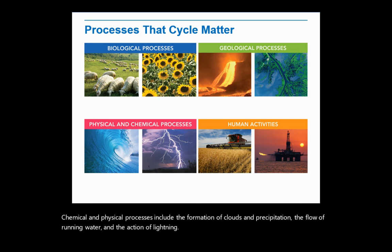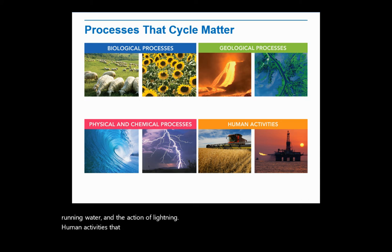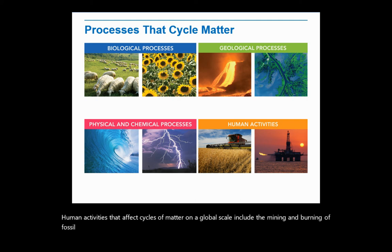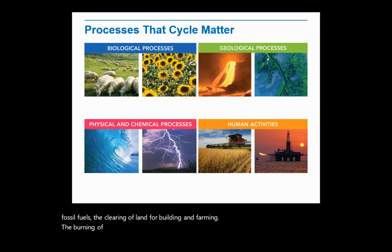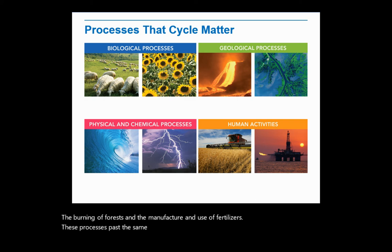Human activities that affect cycles of matter on a global scale include the mining and burning of fossil fuels, the clearing of land for building and farming, the burning of forests, and the manufacture and use of fertilizers. These processes pass the same atoms and molecules around again and again. That's why we say that matter cycles.